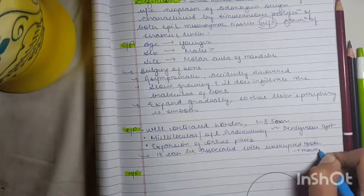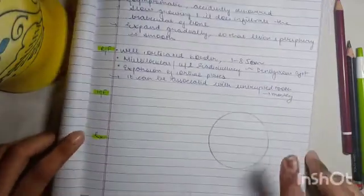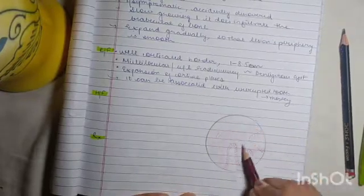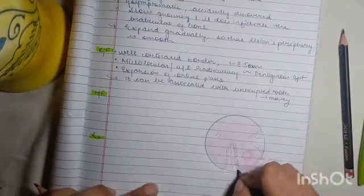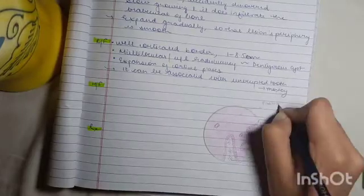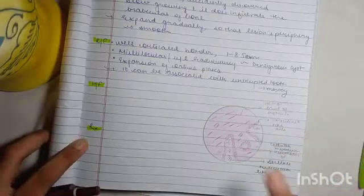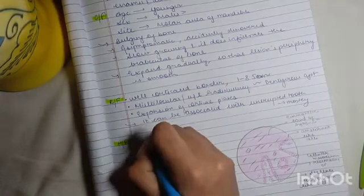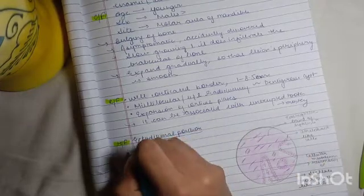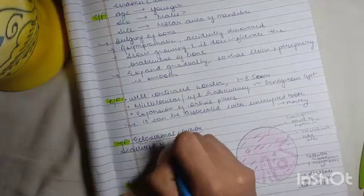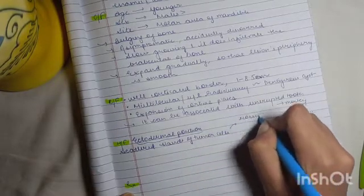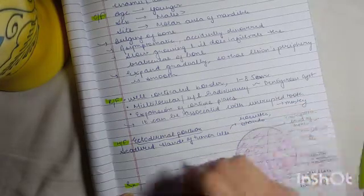Mostly they are associated with it. Now coming to the histopathology, we'll draw a diagram. First, we'll describe the ectodermal portion. In the ectodermal portion, we see scattered islands of tumor cells in the form of rosettes, strands, and nests.